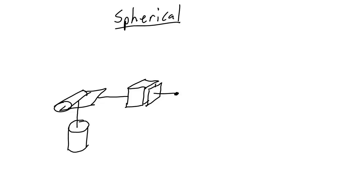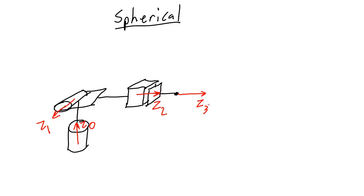The first thing we're going to do is draw the coordinate frames, starting with the z-axis. For a revolute joint, the z-axis is the axis of rotation. So for the zero frame it's up, and for the one frame it's either coming into or out of the page — I'm going to draw it coming out of the page. Then the z-axis for the prismatic joint is the direction of motion, and the coordinate frame on the end effector is the same as the last frame.